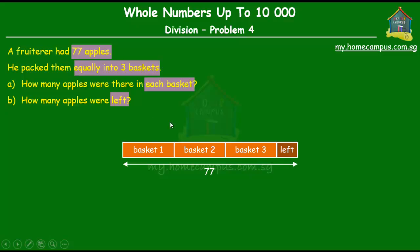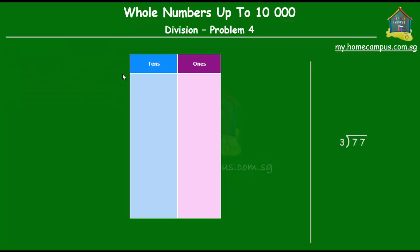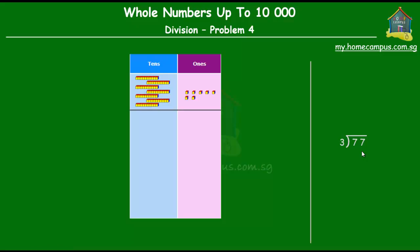The number of apples left will obviously be less than three. Now let's find out how many apples were in each basket and how many apples, if at all, were left. We basically have to do 77 divided by three. In the middle of the screen we'll see how the division actually happens using visuals, and on the right side we'll do the working. Our number is 77, which means we have seven tens and seven ones, and we've got three baskets to divide the apples into.